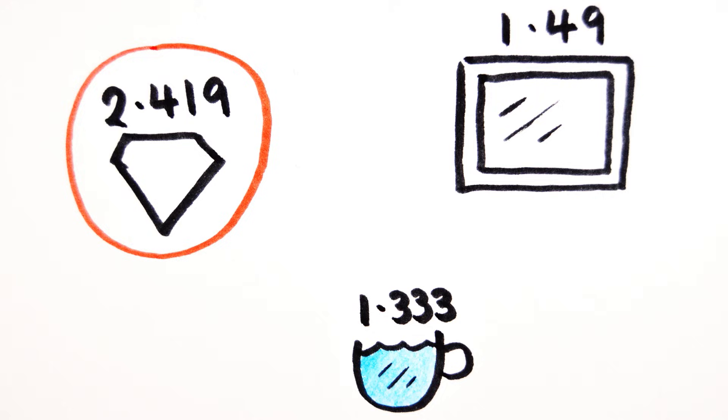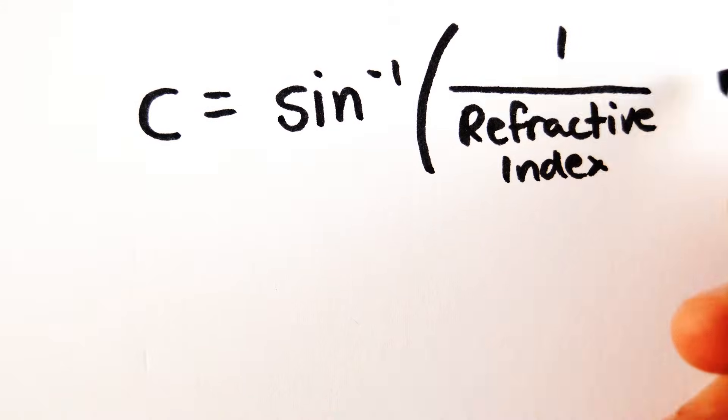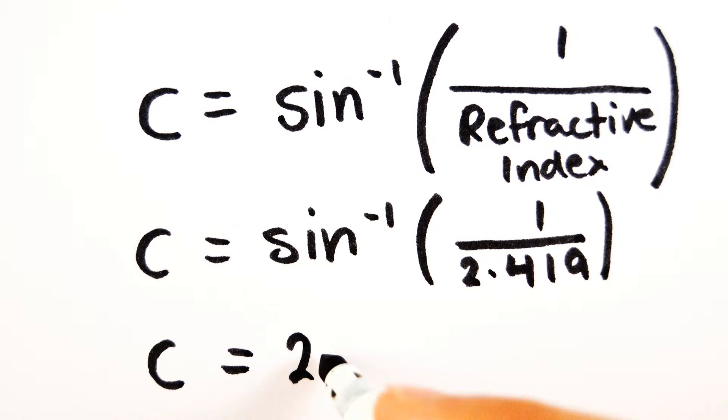For example, diamond has a refractive index of 2.419. By rearranging the equation, we can work out its critical angle of 24.4 degrees.